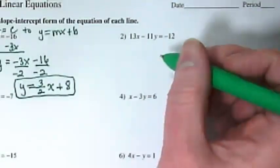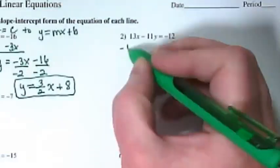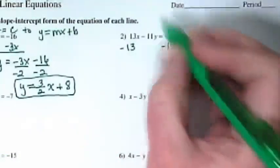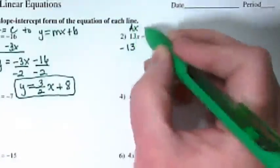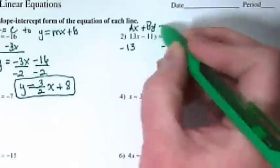What is in our ax place here? The 13x, because remember this is ax plus by equals c.